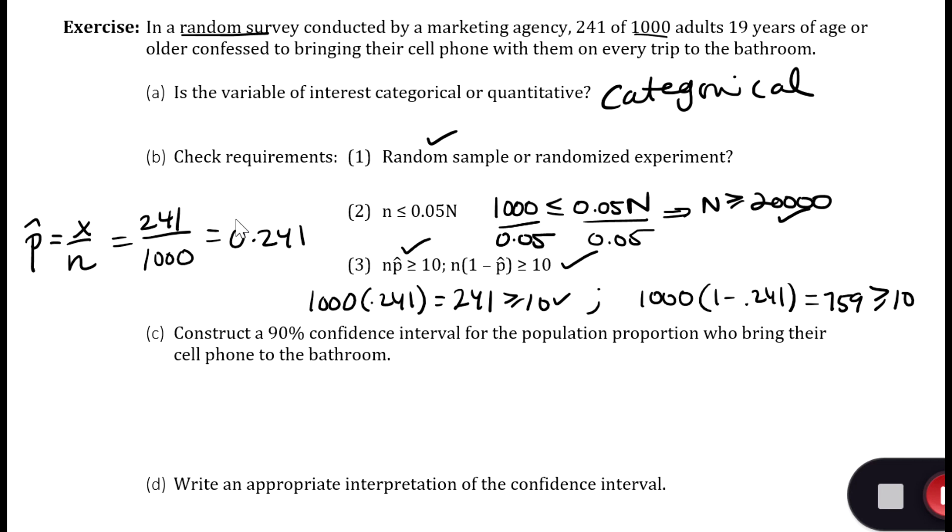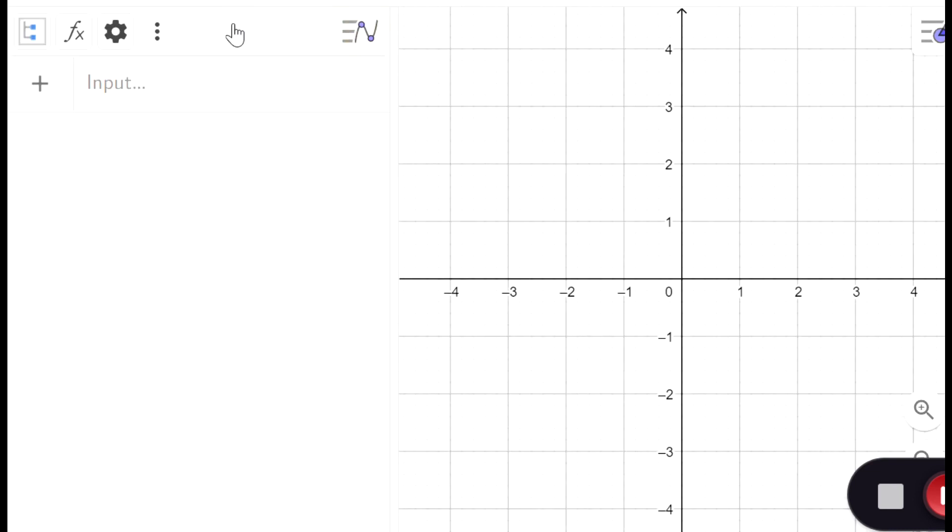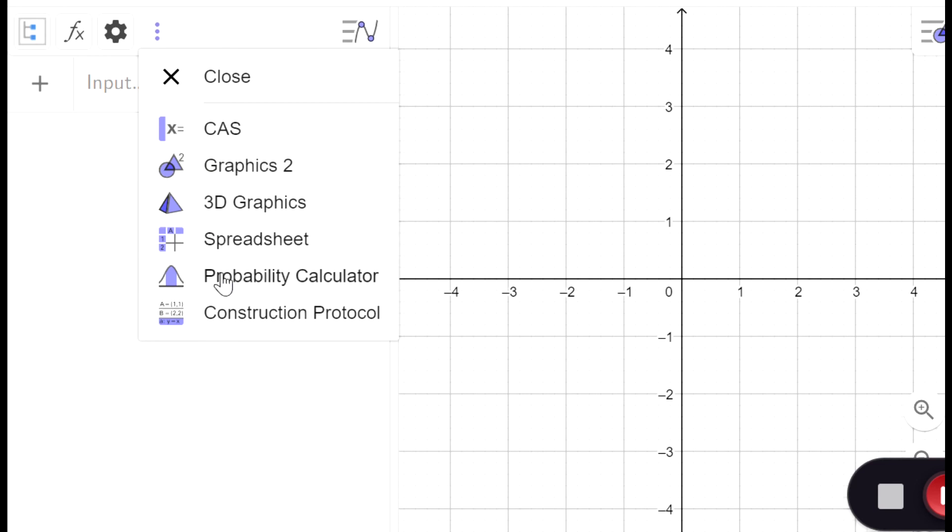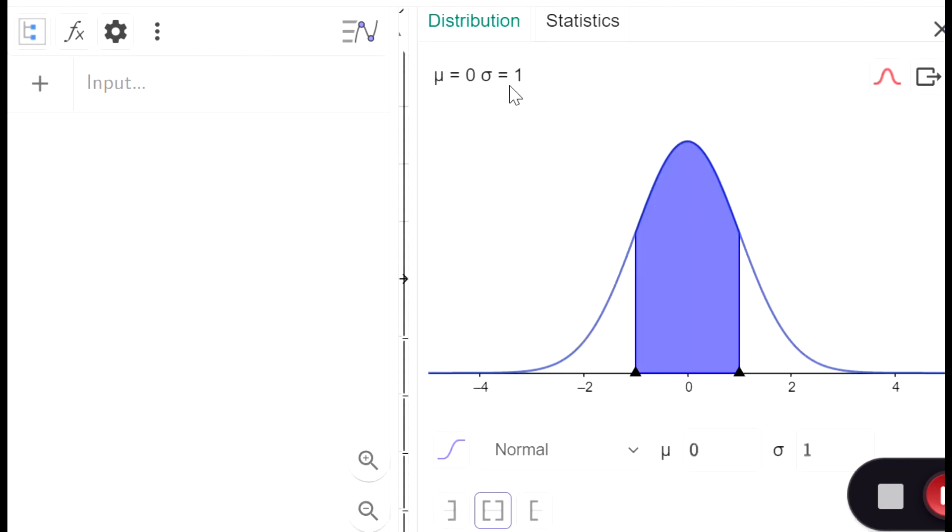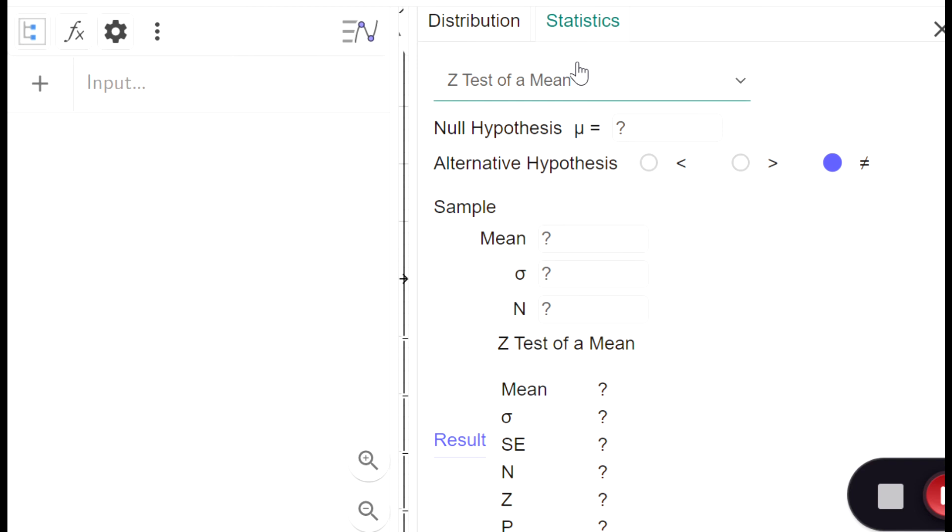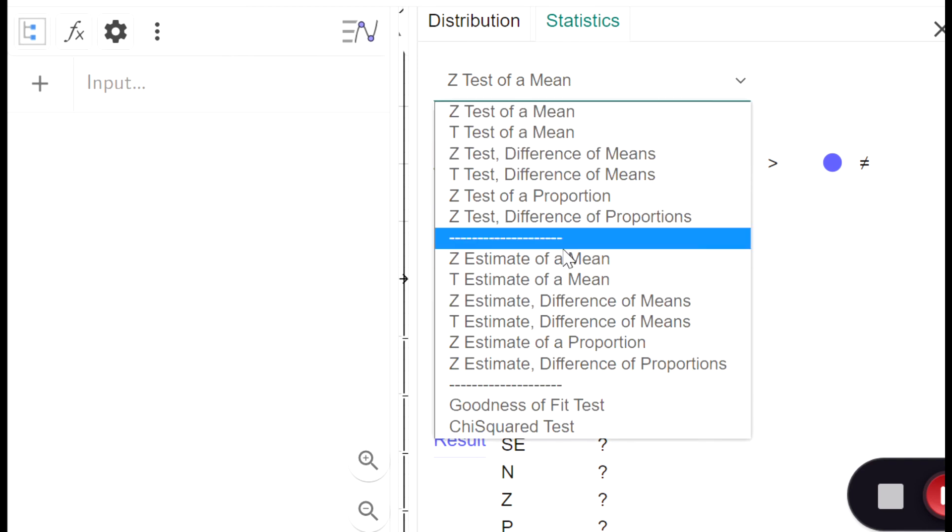When these requirements are satisfied, then we can go through and do our confidence interval for a proportion. So let's go to GeoGebra and construct a 90% confidence interval. We go to GeoGebra, we go to our probability calculator, we go to statistics, and a confidence interval is an estimate. So we're going to do the z estimate of a proportion.